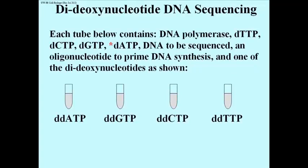This process is called dideoxynucleotide DNA sequencing. We have four tubes here. Each of them contains essentially the same stuff. The only difference between them is which of four dideoxynucleotides they contain. One is going to contain dideoxy ATP, one is going to contain dideoxy GTP, the third dideoxy CTP, and the fourth dideoxy TTP.